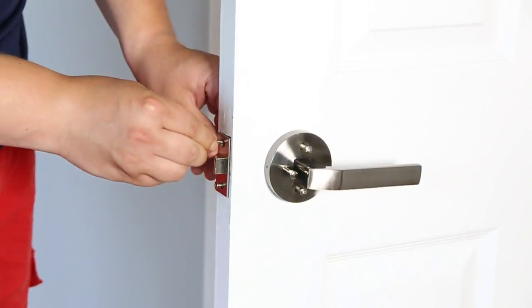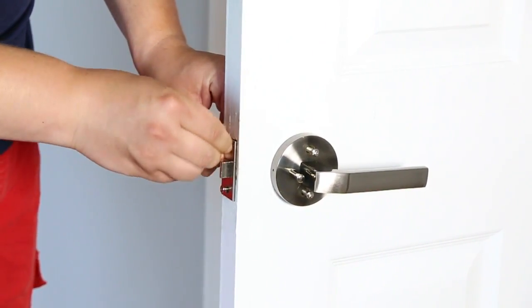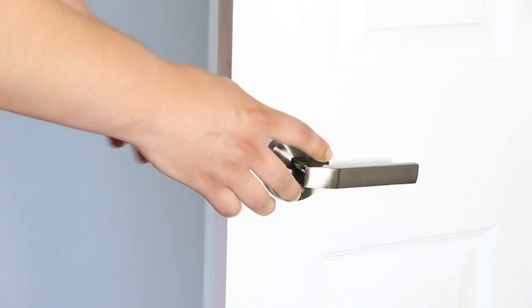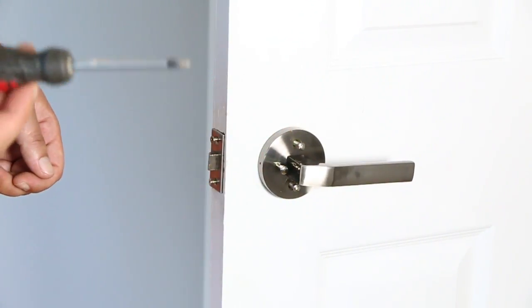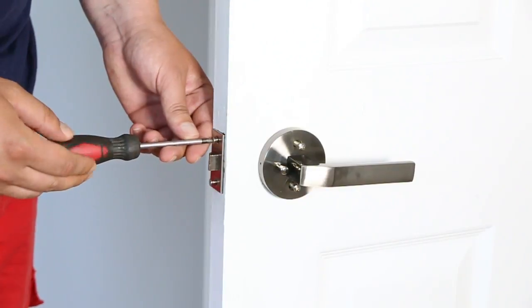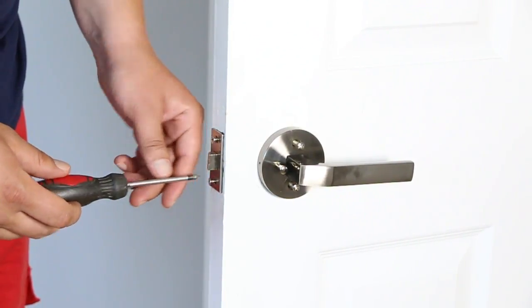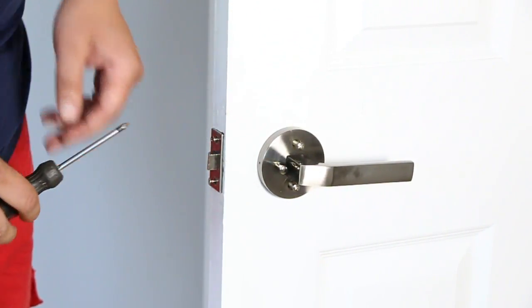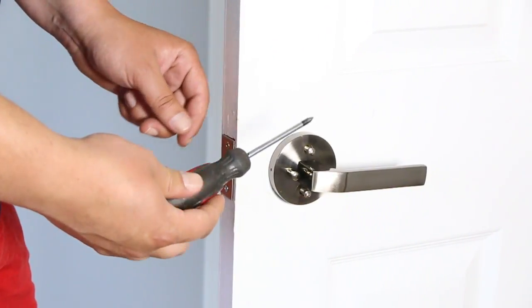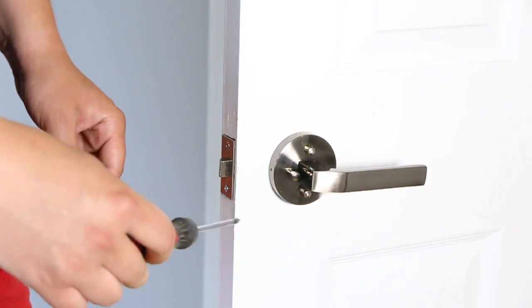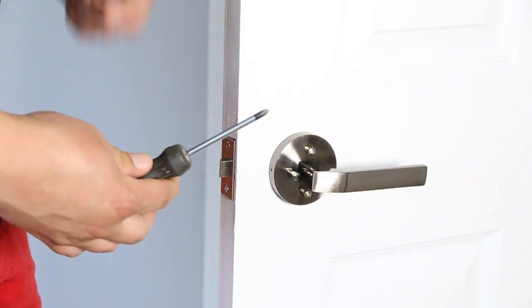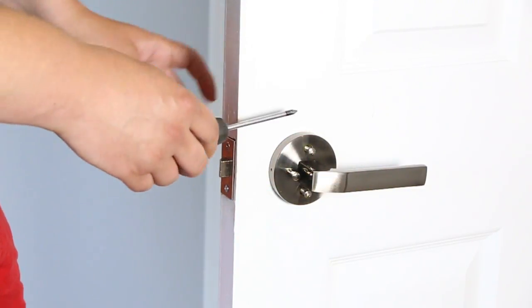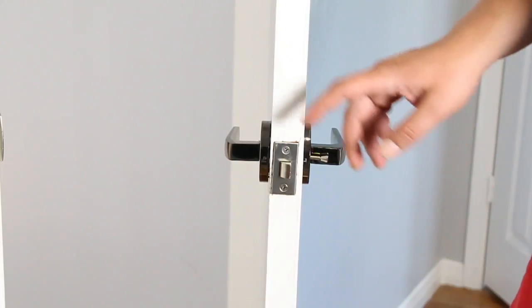I also forgot to mention that these handles are reversible. There's no left or right. So now we're going to use our same Phillips screwdriver and we're going to put in all these two bolts and two screws. You can only use hand tools like this. If you have a drill with a Phillips screwdriver, never use it because you're going to ruin the handles.